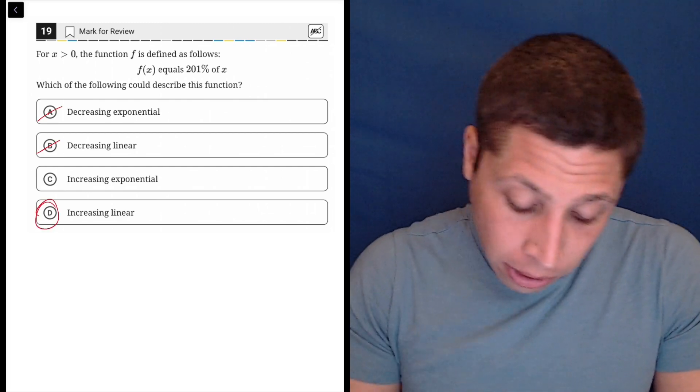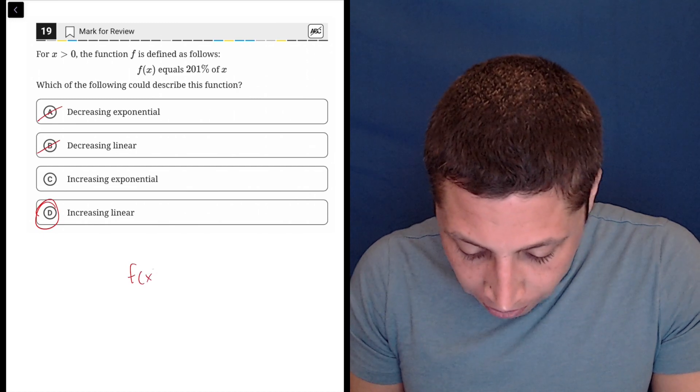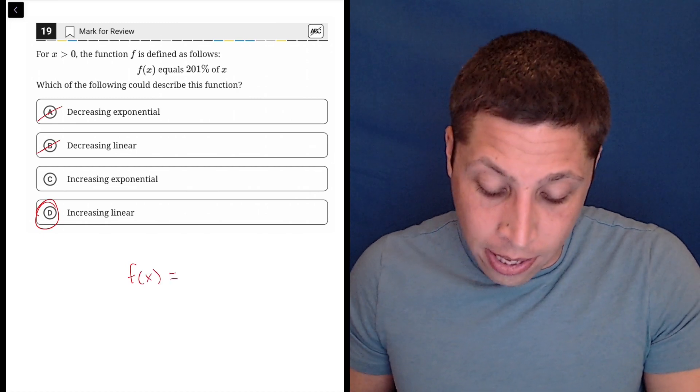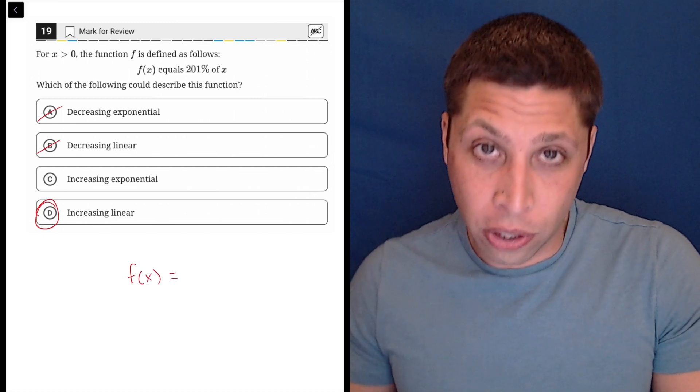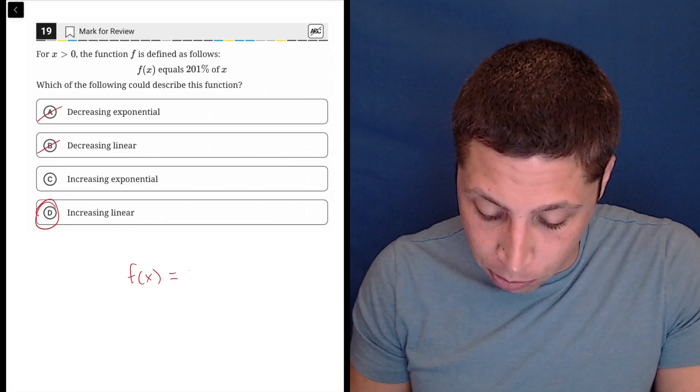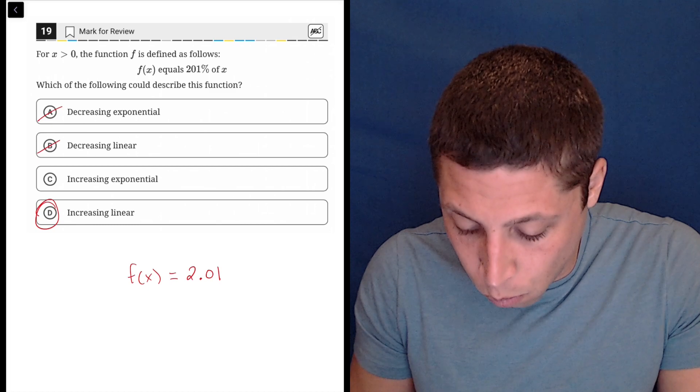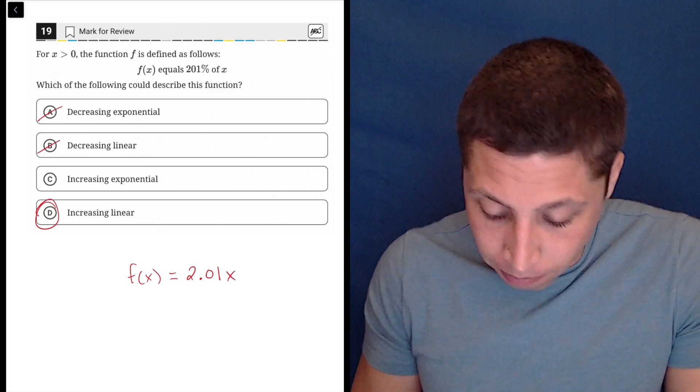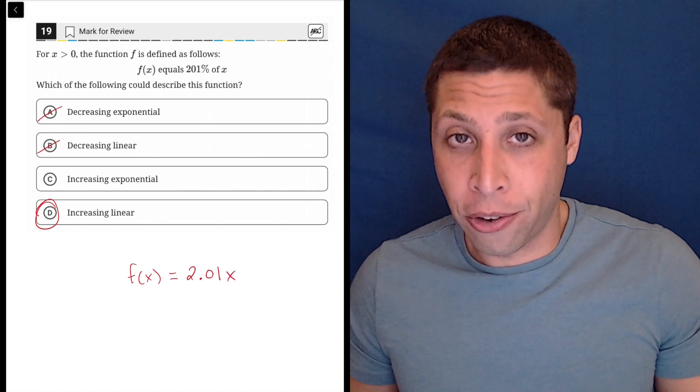So if I were to convert this into an equation, f of x equals, that part's easy, 201% of x. So 201%, we would write that as a decimal, so that's 2.01. And then of means multiply. That's a linear equation.